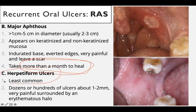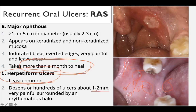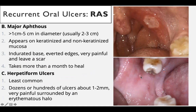The third type is herpetiform ulcer, the least common. There are dozens or hundreds of ulcers, about one to two millimeters in size — about one-tenth of one centimeter. They are pinpoint, pinhead-sized, found in groups. They are very painful and surrounded by erythematous shadow — a redness around them. You see the yellow area surrounded by redness, and this redness helps identify there is a problem.